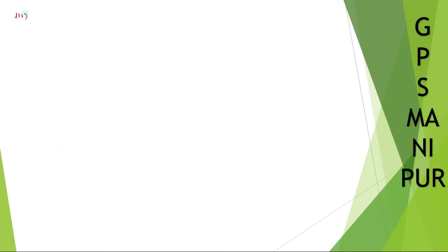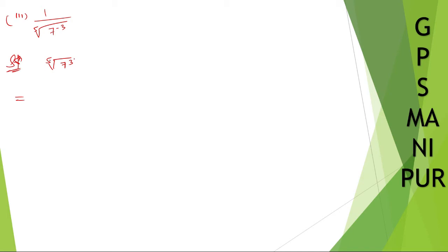Roman number three: one divided by the fourth root of five, with seven to the power minus three. If the negative sign is in the denominator, it moves to the numerator and becomes positive. So seven to the power minus three becomes seven to the power three in the numerator. The fourth root of five gives five to the power one-by-four, so the answer is seven to the power three by five.